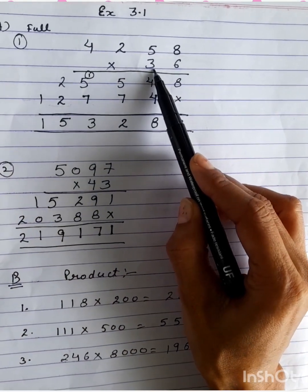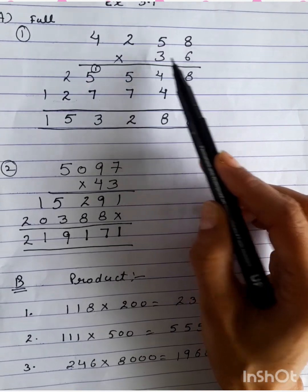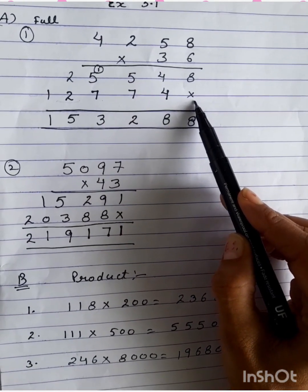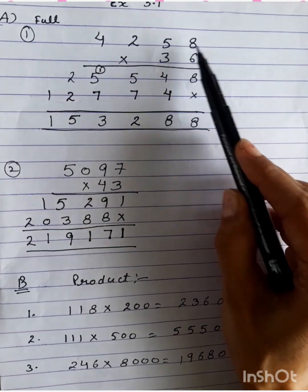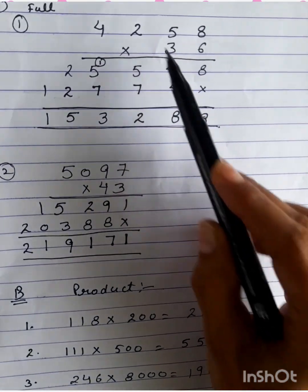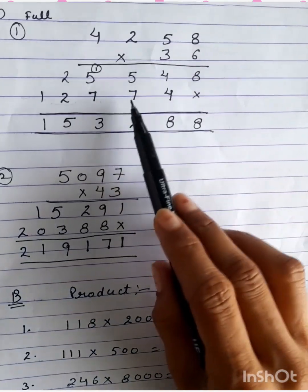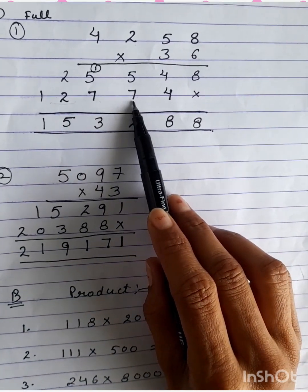Then I will start with 3, that is the tens place digit. That's why I have put cross here below the ones place digit. So 3 times 8 is 24. 4 I have written here, 2 carry for the next one. 3 times 5 is 15. 15 plus 2 is 17. 1 carry forward.